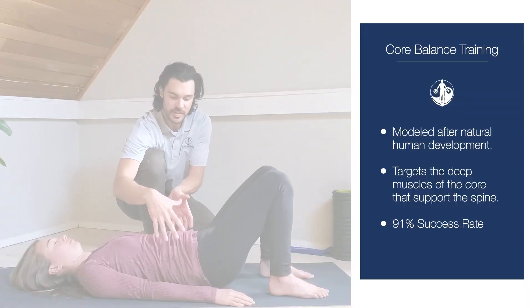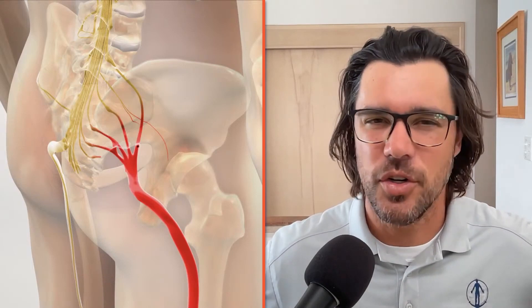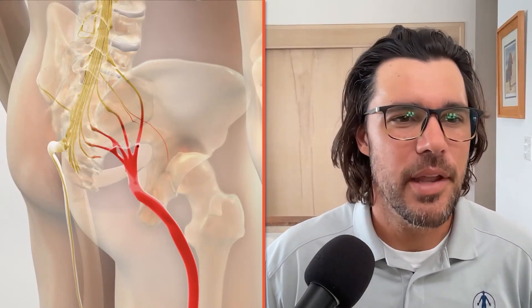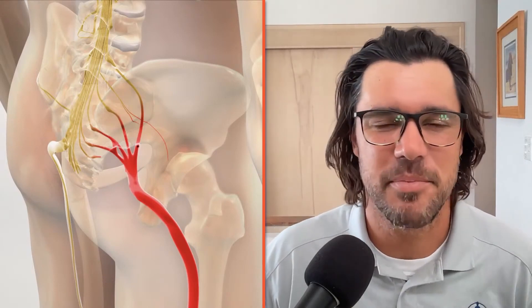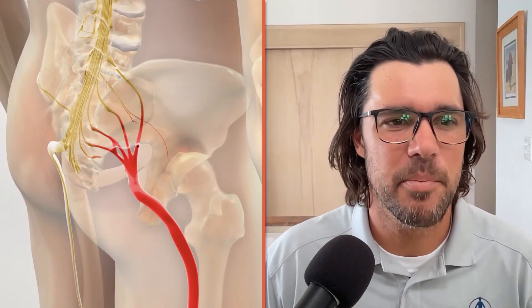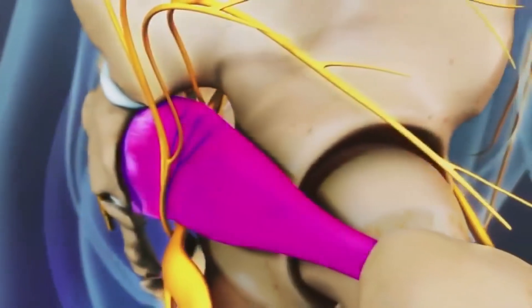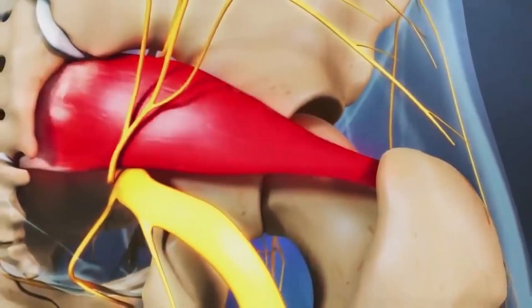Core balance training is one solution for improving spinal support. You've got to find a solution that addresses your core. If you determine you have no lower back pain but have symptoms in your buttocks with possible piriformis impingement, that slightly changes your approach — you'll want to address the hip, since the piriformis is a hip muscle. Improving the strength and mobility of your hip muscles can help the piriformis relax and stop compressing the nerve. It starts with questions, and the answers guide you toward a more specific solution.